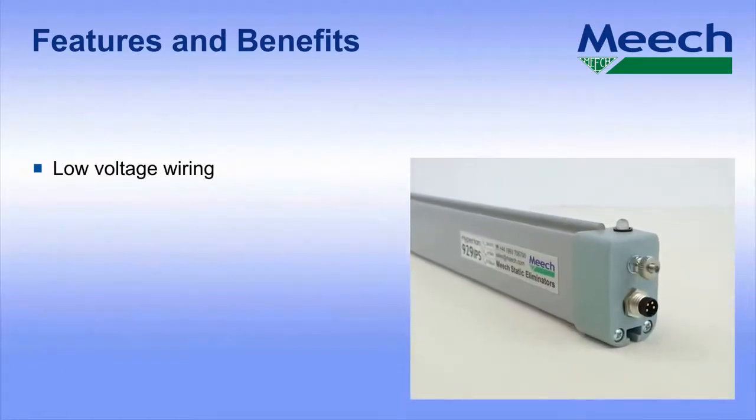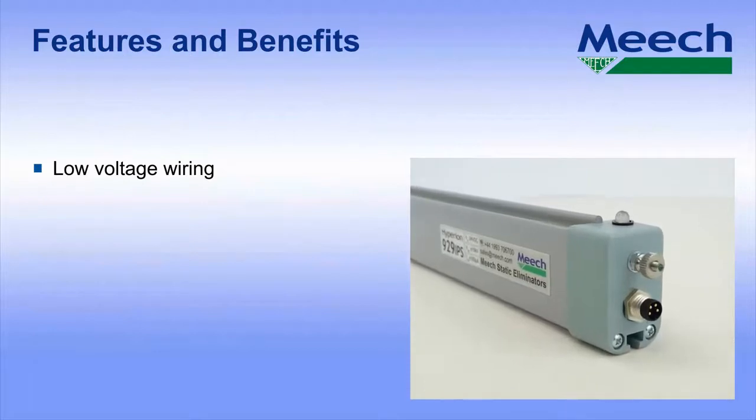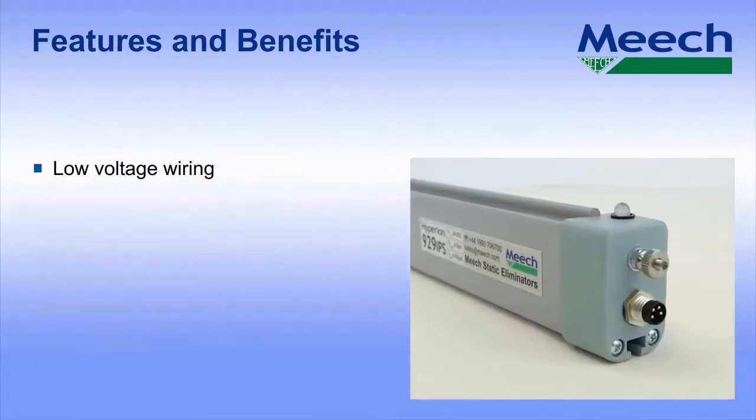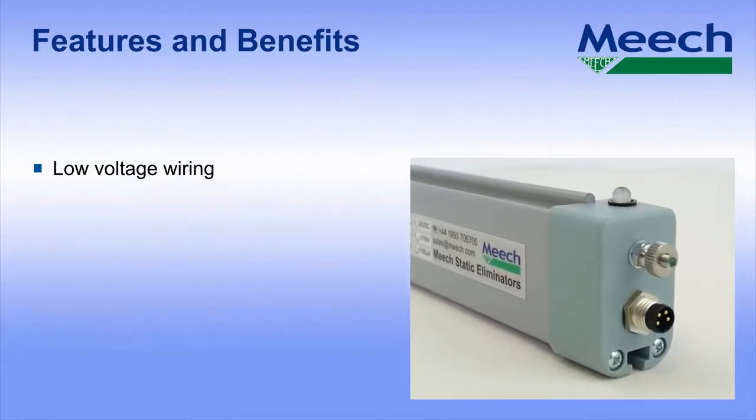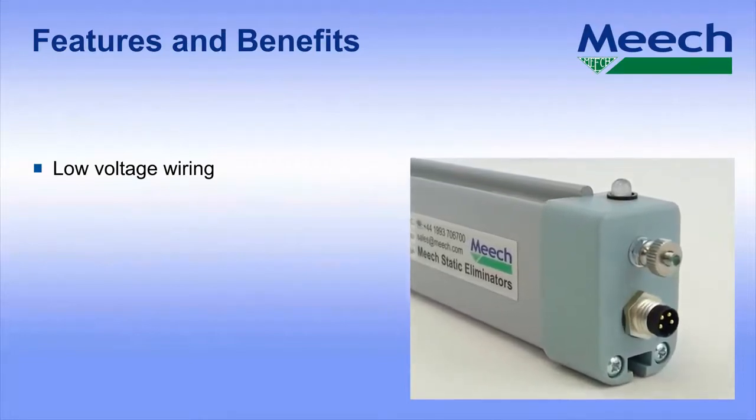The 929 IPS is powered by 24 volt DC. The industrial M8 connector greatly simplifies installation, avoiding the need to route high voltage cables from a remote high voltage power supply.